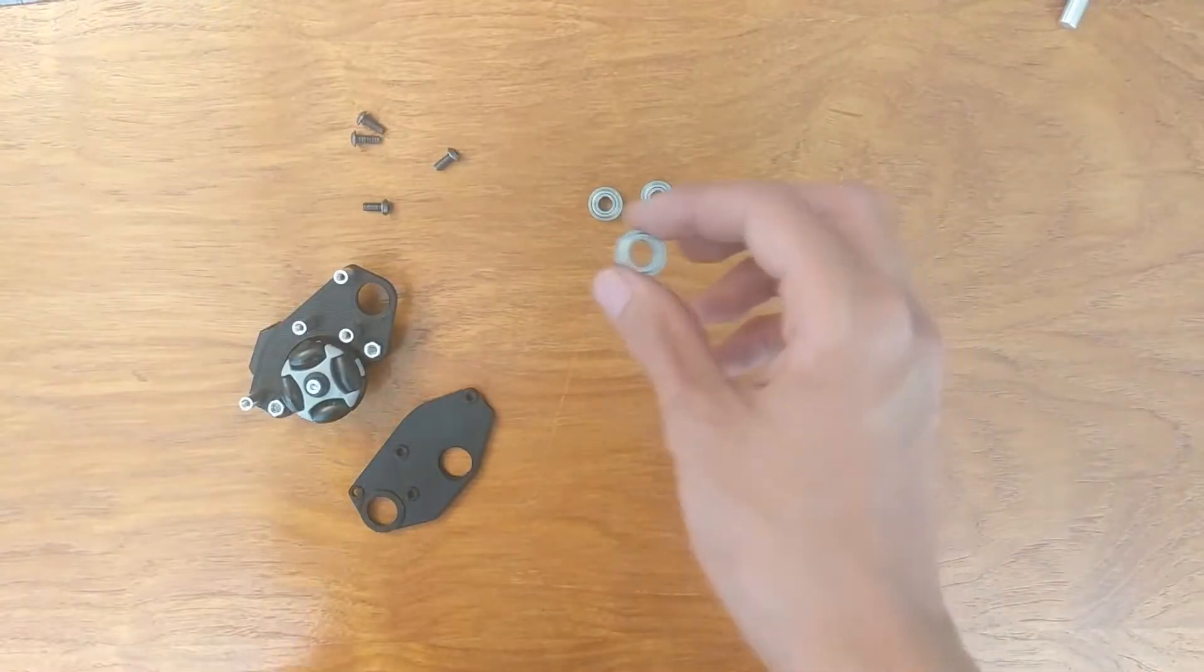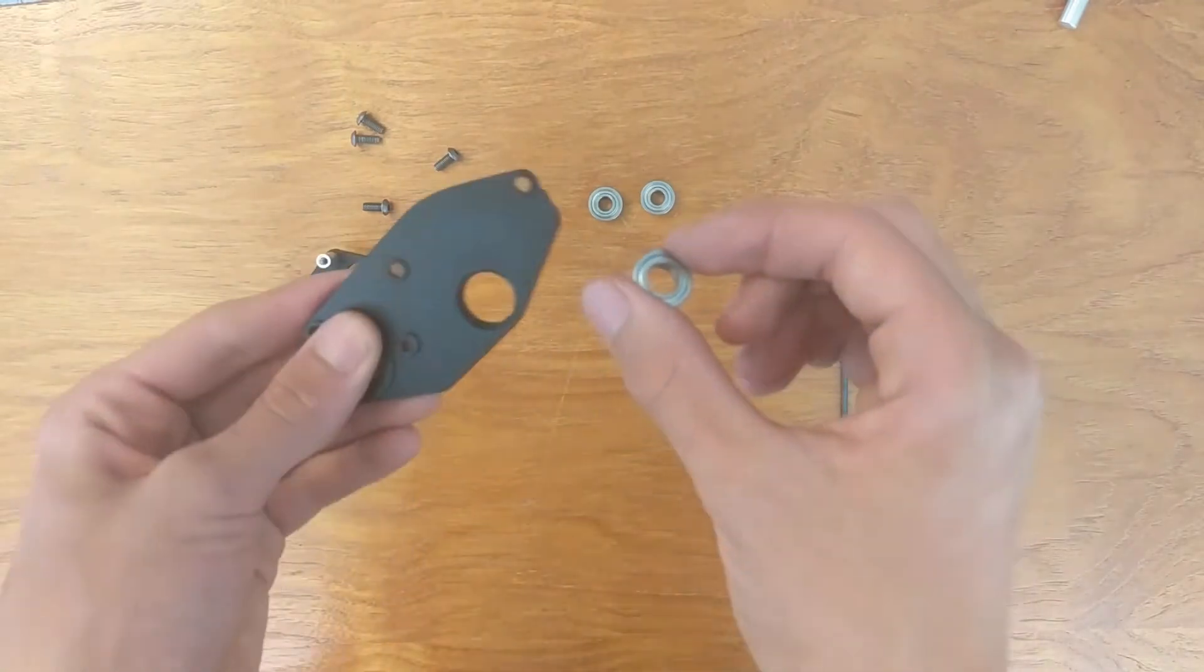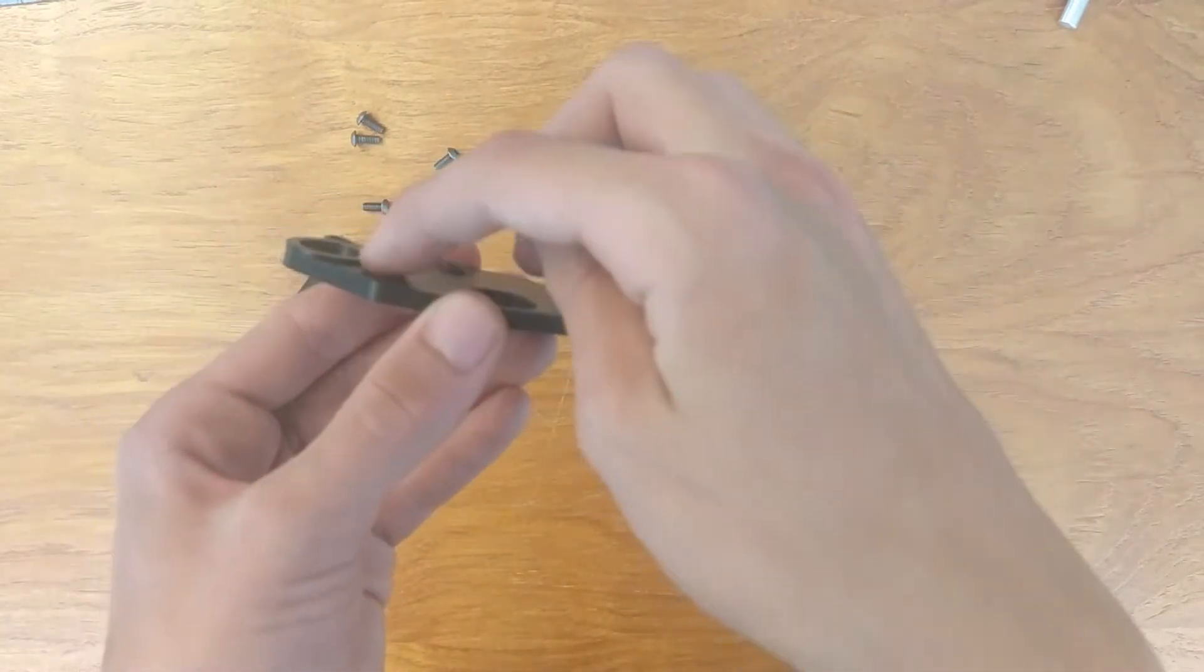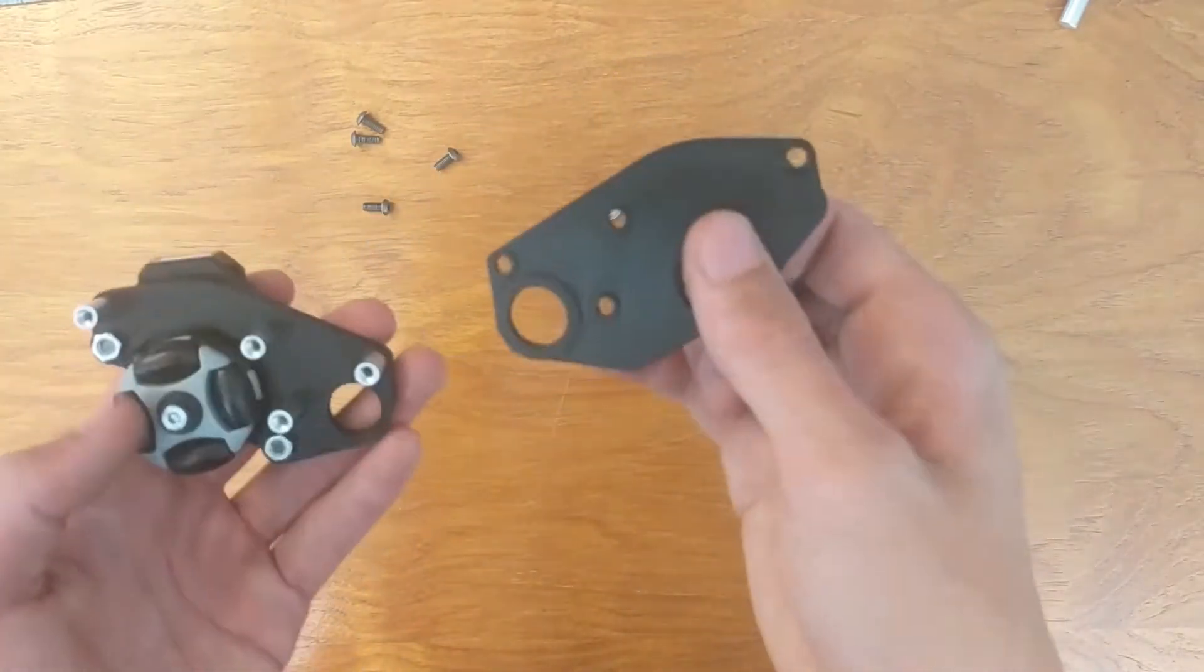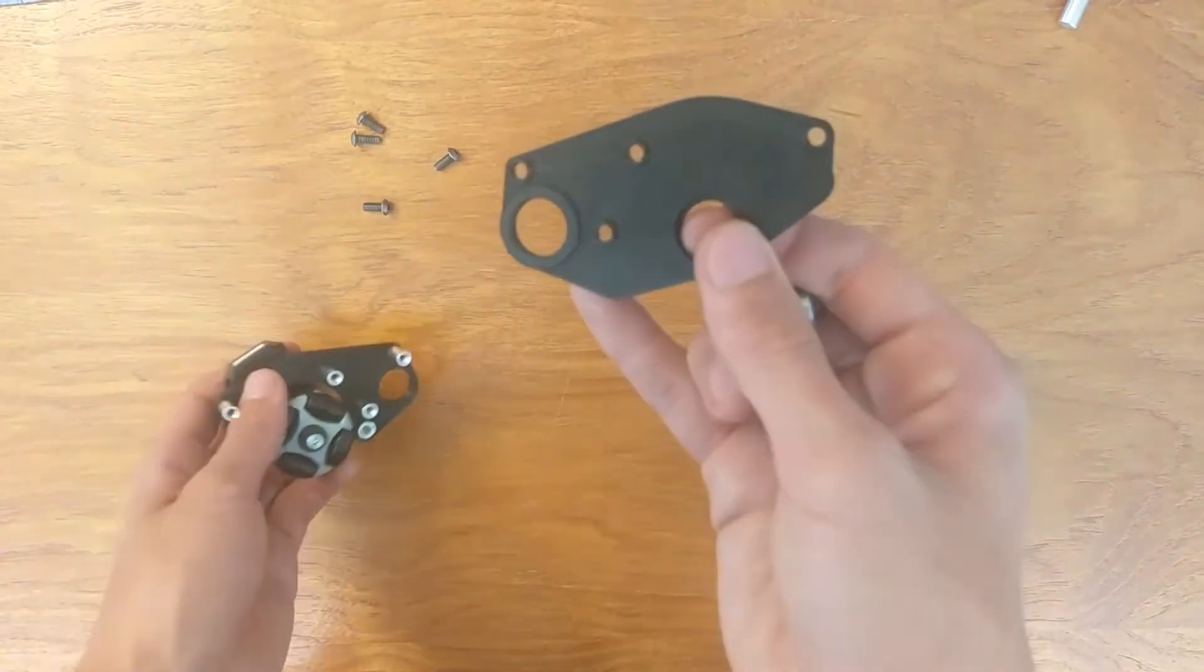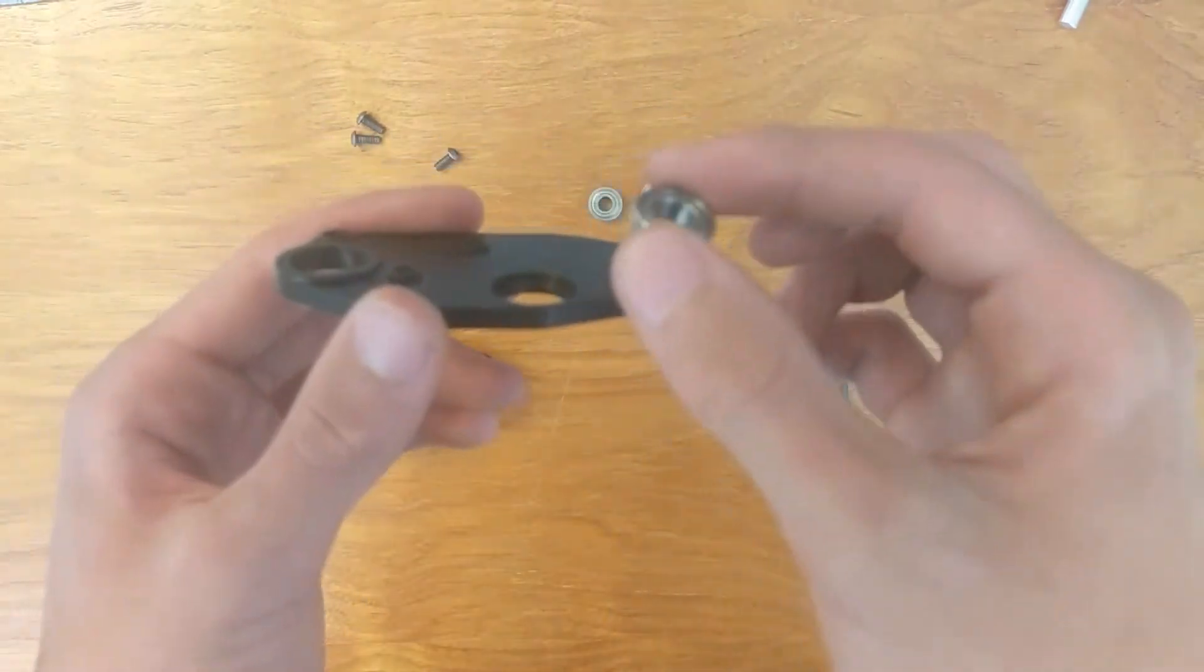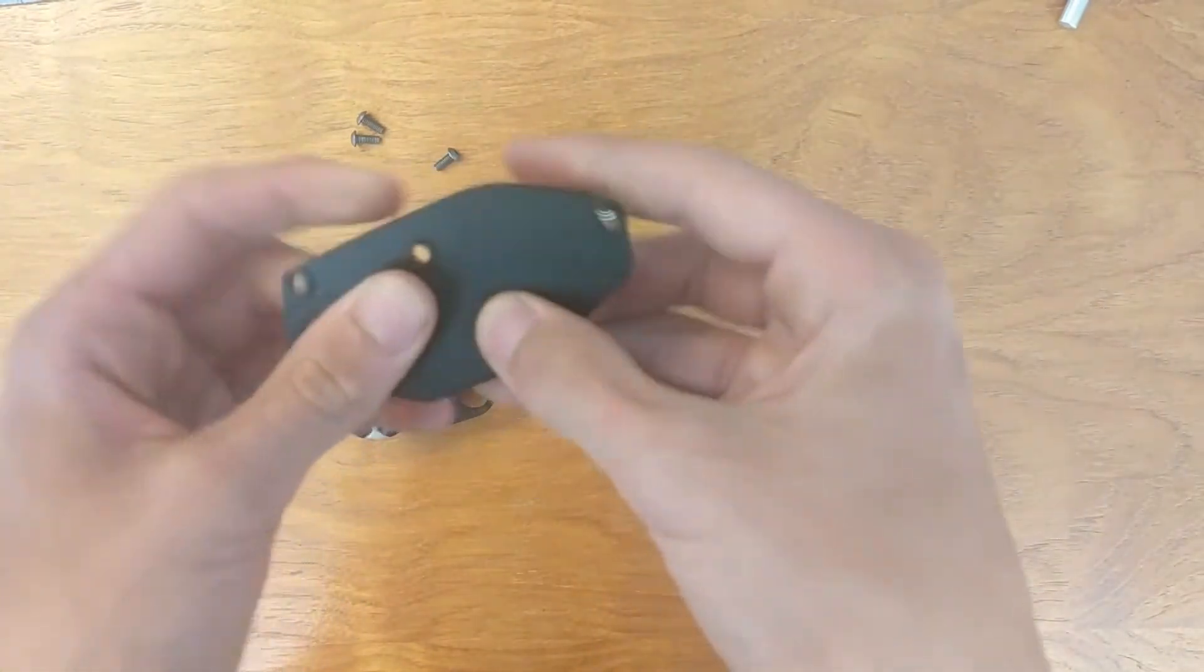Now we're going to put the 8 millimeter ID bearing into this plate. On the plate, you can notice that there are some bumps. The bumps are going to face into the other plate like this. Take the 8 millimeter bearing and put the flange on the bump side, and it should press fit in nicely like that.